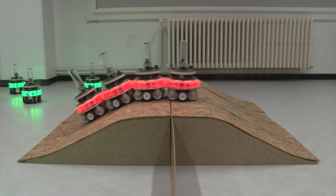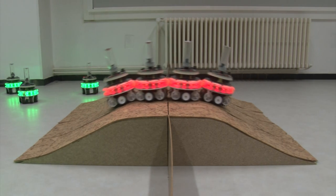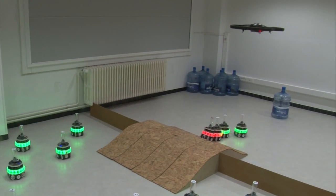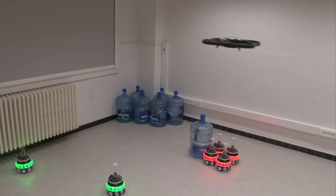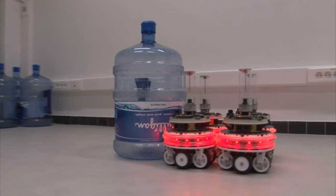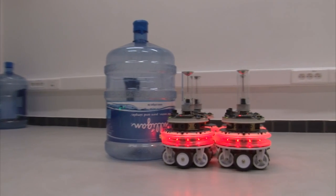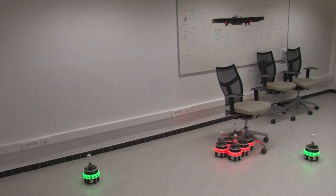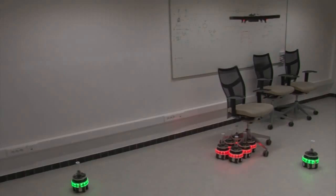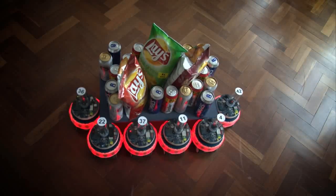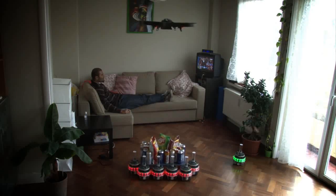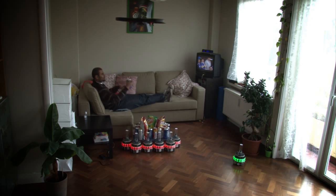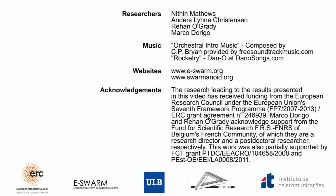Spatially targeted communication expands the potential of self-assembling systems by allowing ground-based robots to benefit from cooperation with flying robots. Any robotic platform equipped with LEDs and a standard camera can participate in spatially targeted communication. Our current focus is on bringing our research out of the laboratory and into the real world.